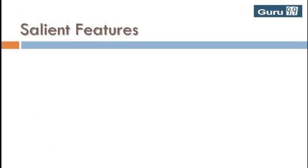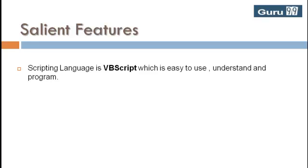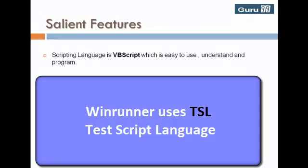Let's look into certain key features of QTP. The scripting language used is VBScript, which is easy to use and understand. Earlier automation tools used proprietary scripting languages — for example, tools like TSM used proprietary script languages, which caused an additional burden on automation engineers to master them, leaving aside the challenges faced during automation.